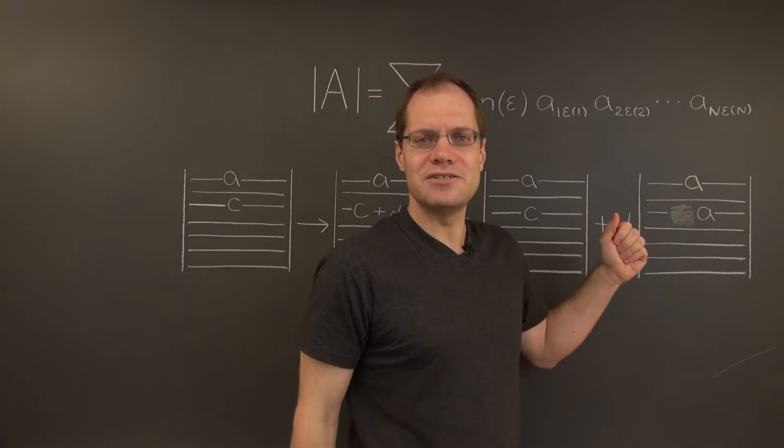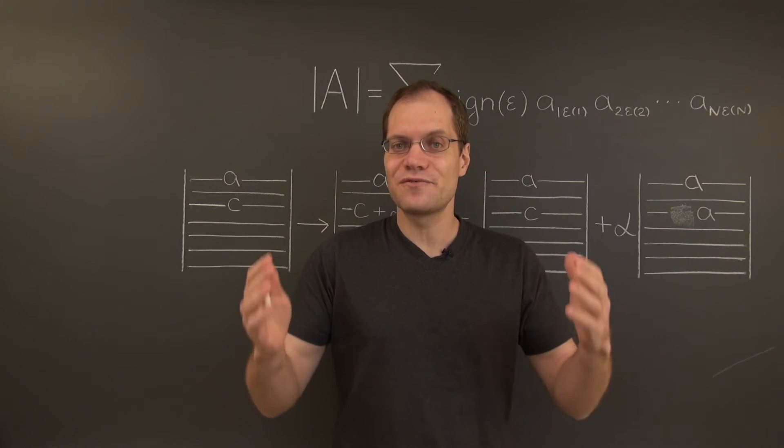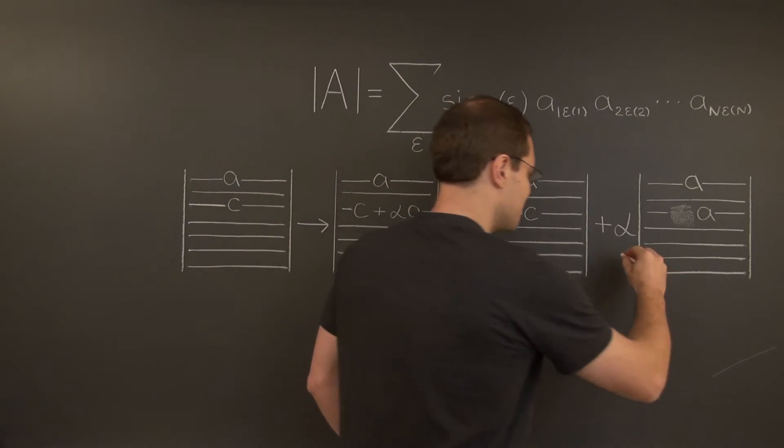And now you have a matrix with two identical rows. And by the direct consequence of the alternating property that we discussed, this determinant equals zero.